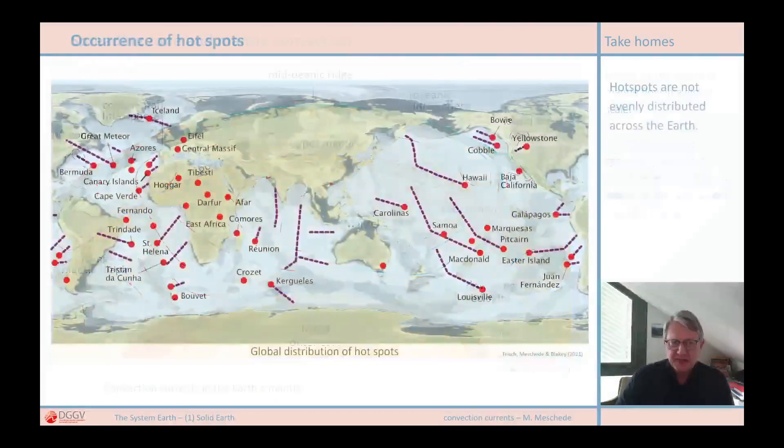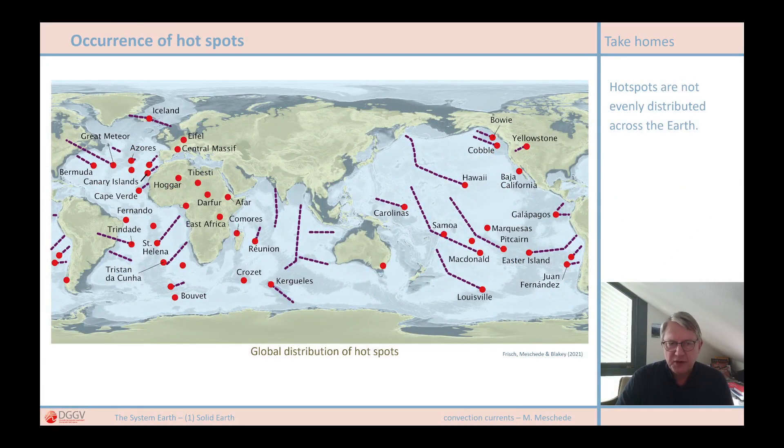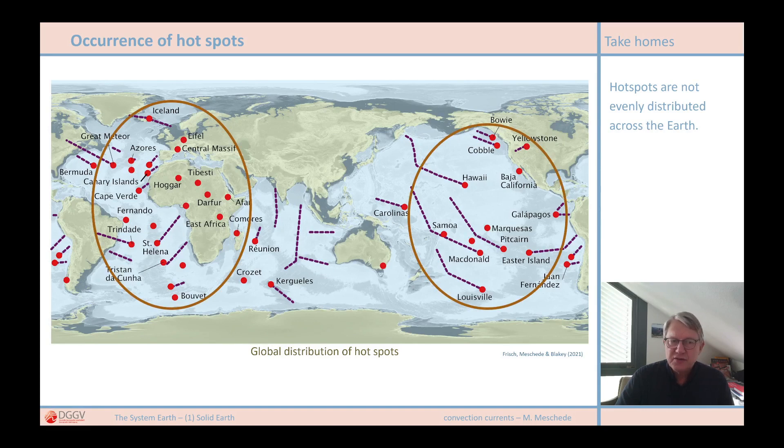Hotspots are not statistically distributed across the Earth's body, as you can see on this map. There are two clusters, one around Africa and the eastern Atlantic, and another in central and eastern Pacific. And that, in turn, is related to the Earth's large heat exchange system. And this is nothing else than a system of convection currents.